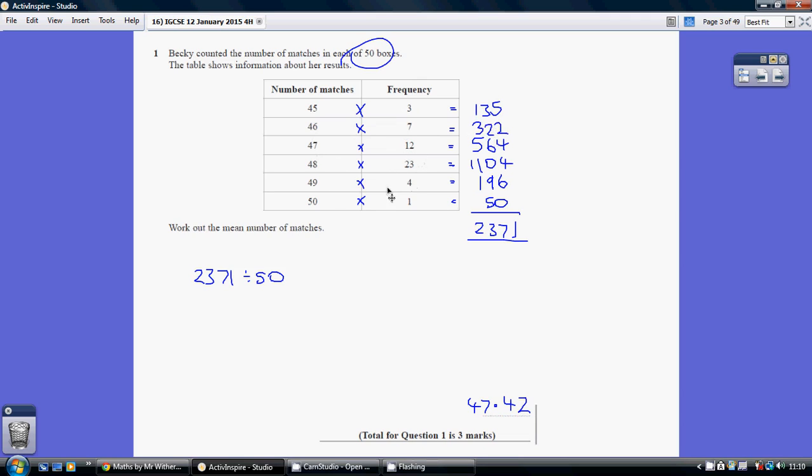So we cross multiply. This gives us little batches of totals of matches. We add all of these up and that gives us 2371 matches in total.